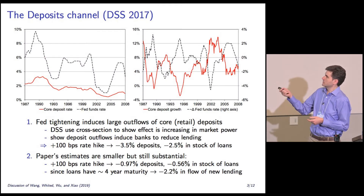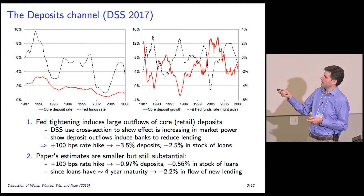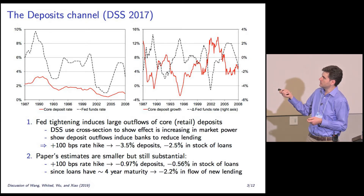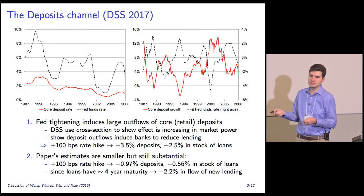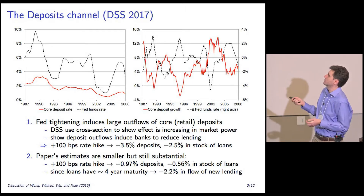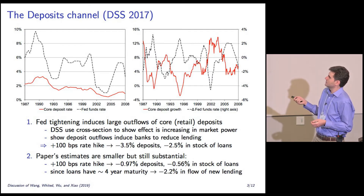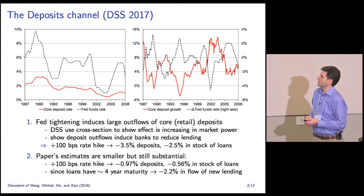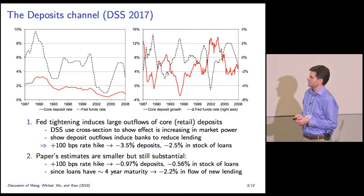Just a quick summary of what the deposits channel is about. On the left, the red line is the average deposit rate banks pay; the black line is the Fed funds rate. When the Fed funds rate is low, deposits are fairly competitive — rates are not too far off market rates. But as the Fed starts raising rates, banks barely raise their deposit rates, and suddenly a big spread opens up between deposits and market rates — going from like zero to 400 basis points. This is a $10 trillion asset class. Deposit growth is very negatively correlated with the Fed funds rate: when the Fed funds rate is increasing, deposit growth is dropping, and vice versa.